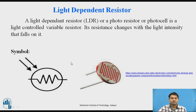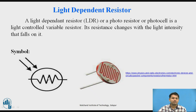This LDR is also called a photo resistor or a photo cell. Photo resistor in the sense that the resistance changes with the light intensity falling on it, and a cell in the sense that when connected with an external energy source it acts as a variable voltage. This is the symbol of the LDR, and this is one of the actual images of the LDR.